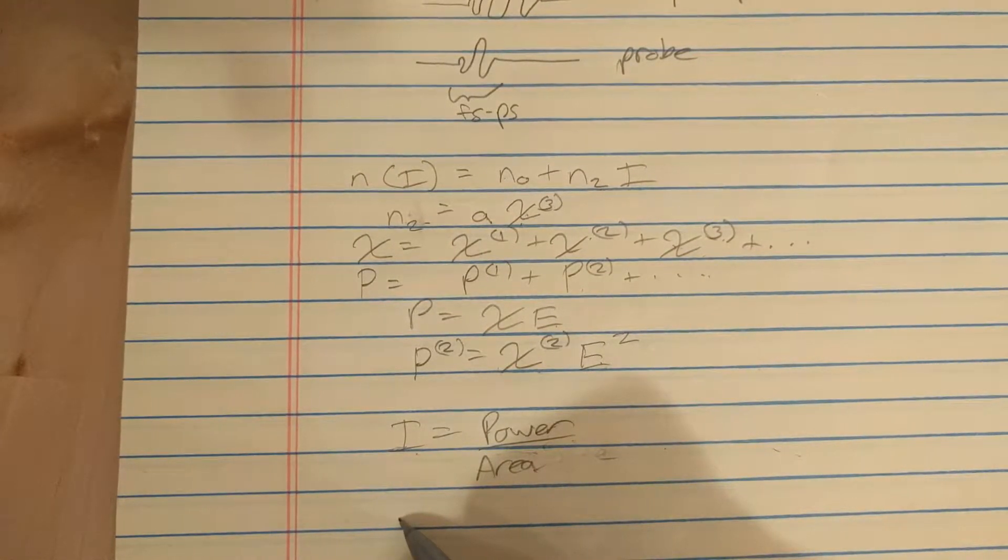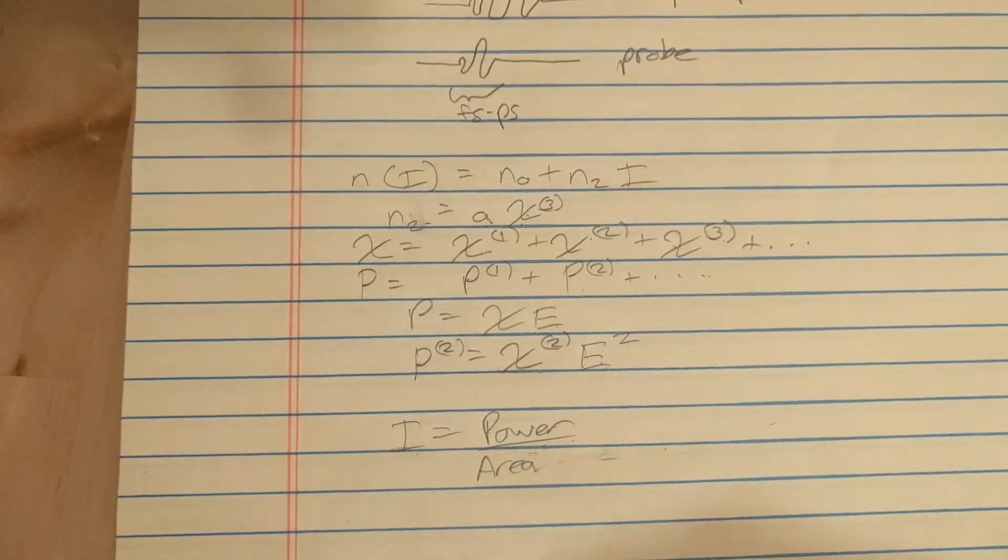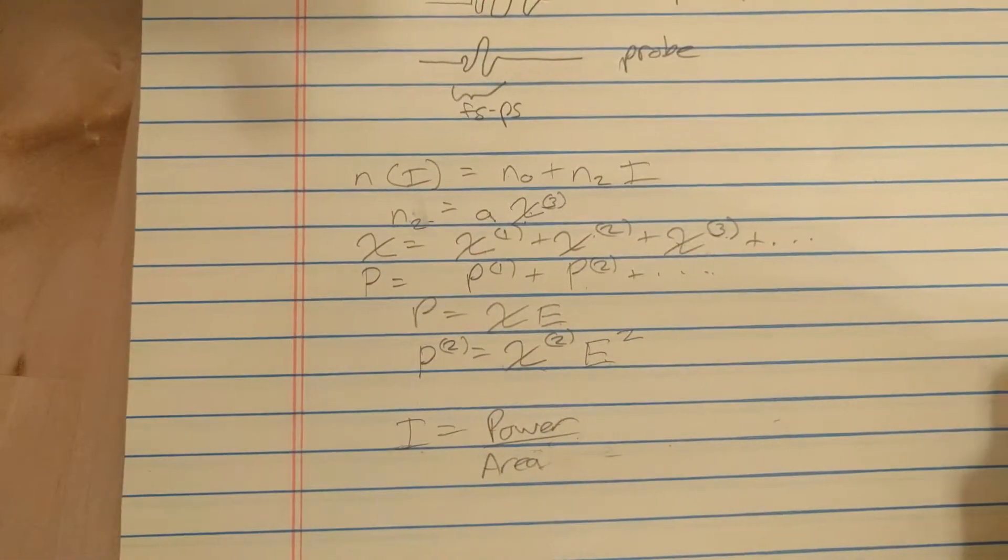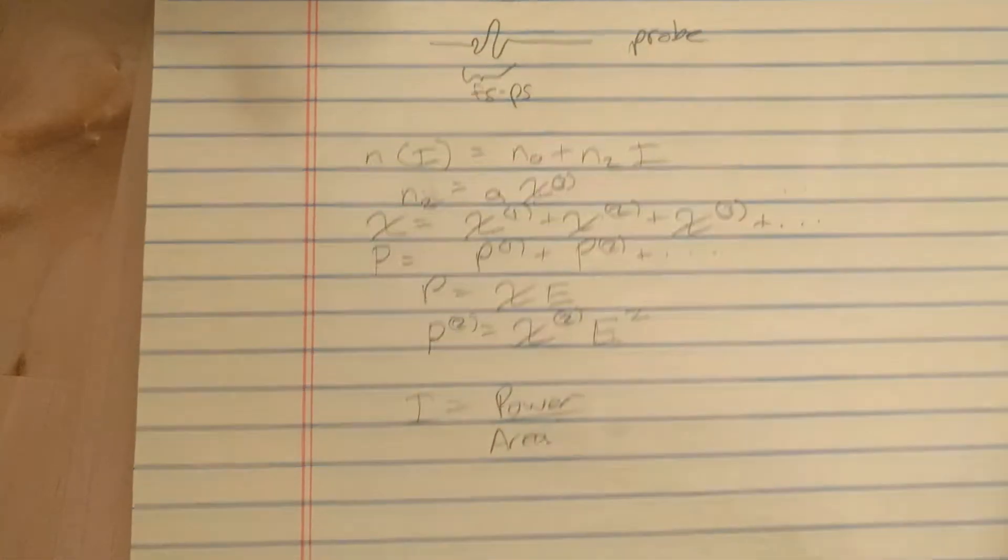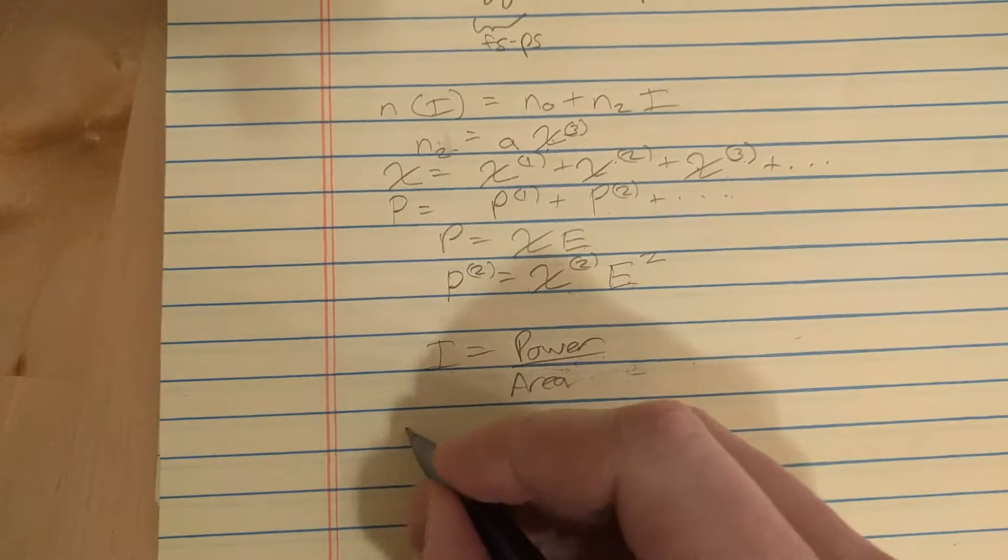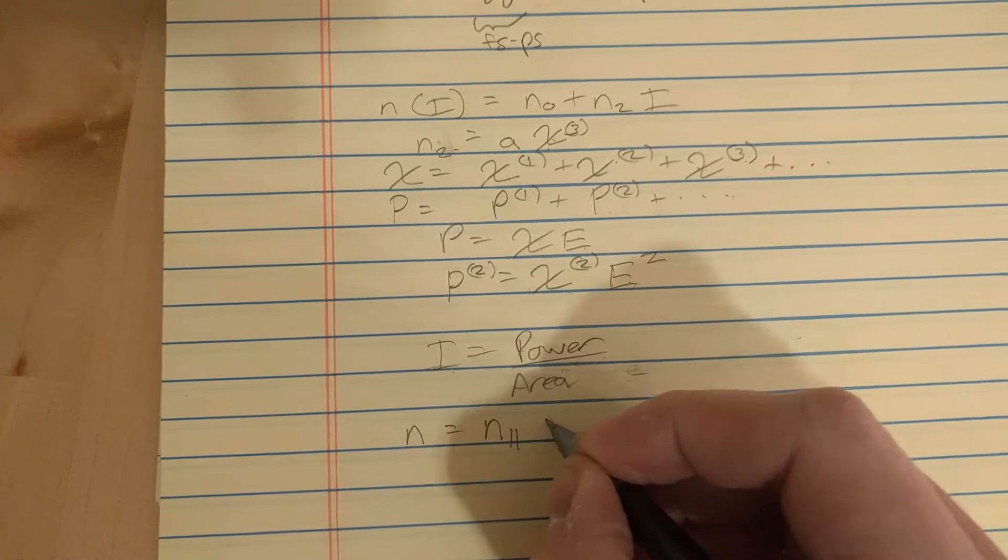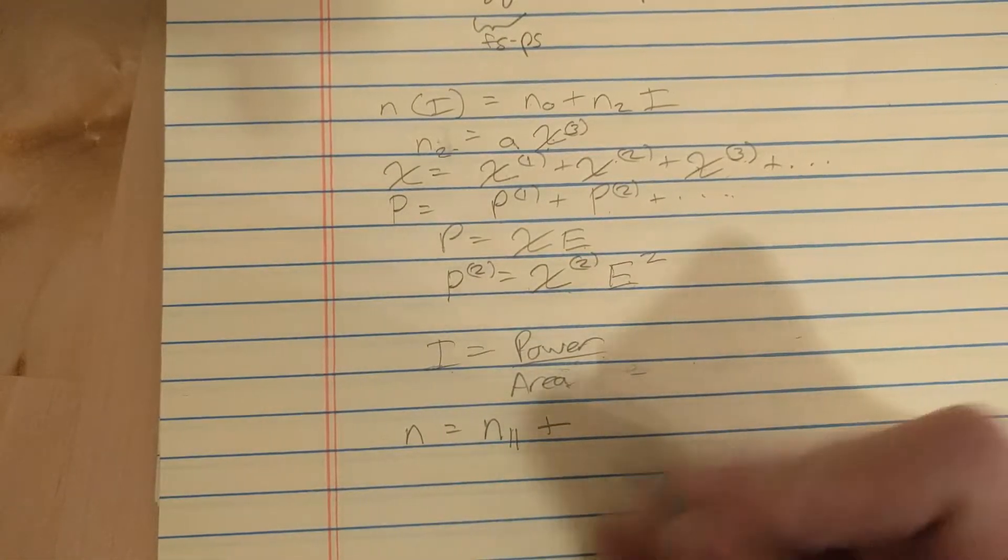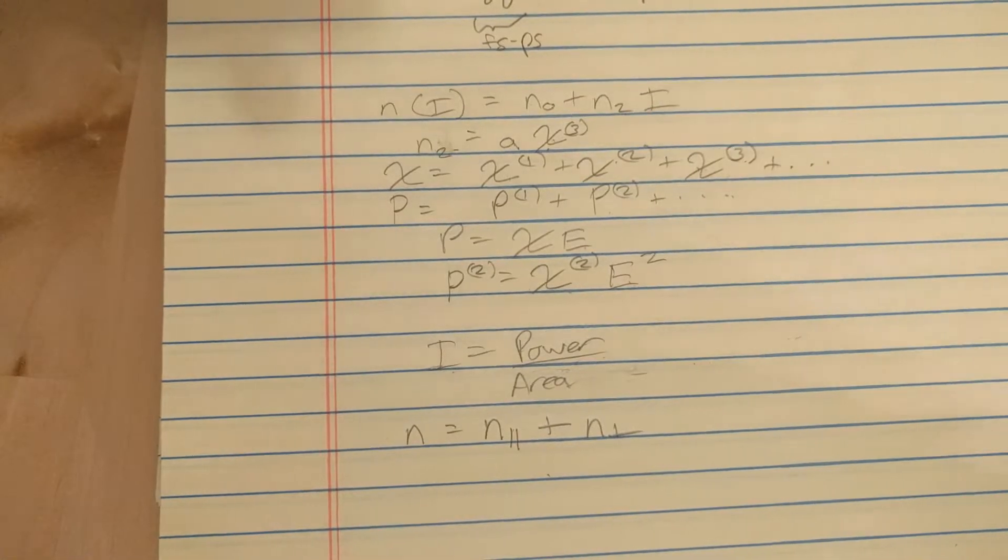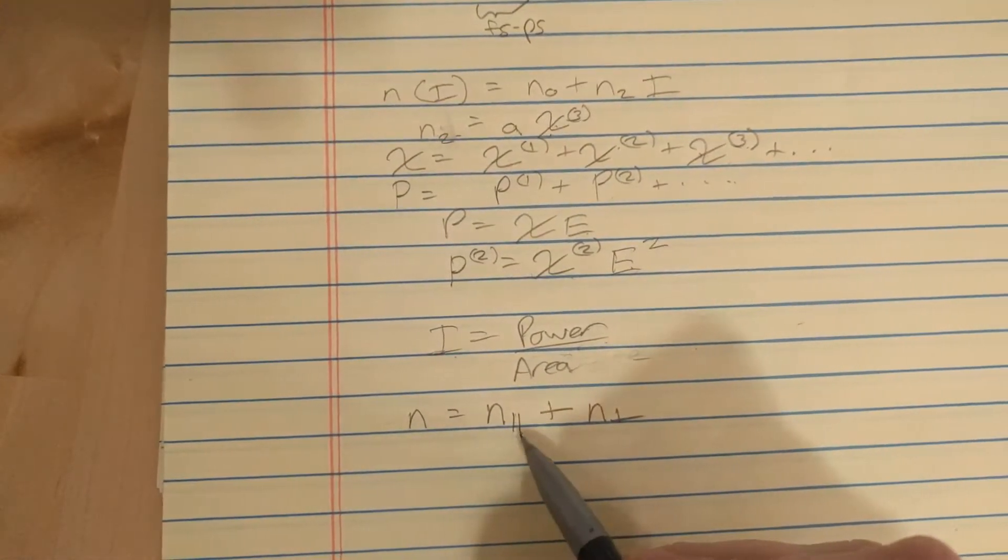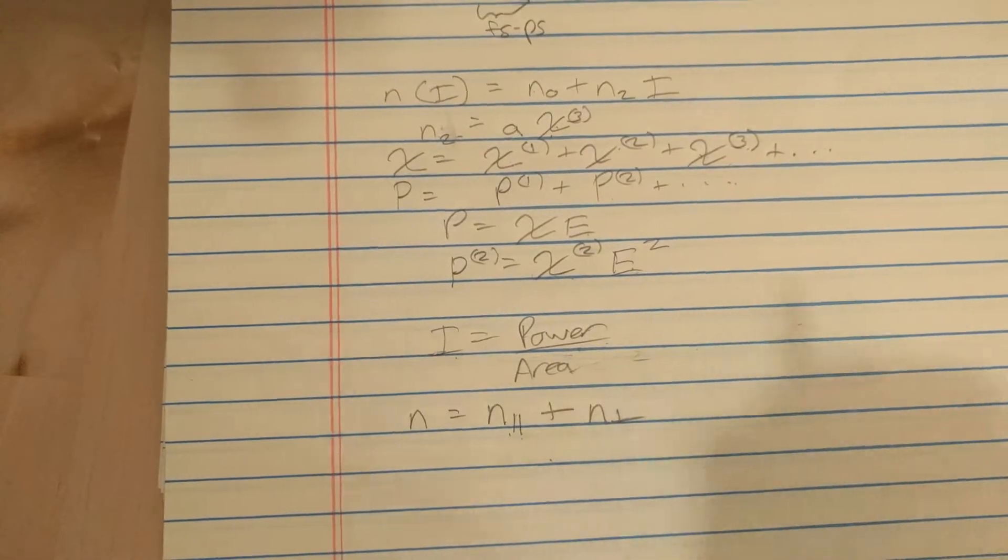So, what the Kerr effect is going to do to your material is it's going to induce a birefringence. Birefringence means you have a different index of refraction in different directions. So you can think of the index of refraction as a perpendicular part, or a vertical part, and a horizontal part.